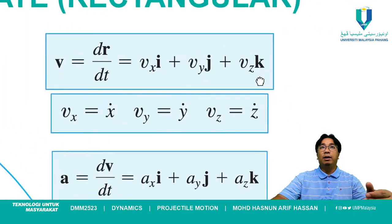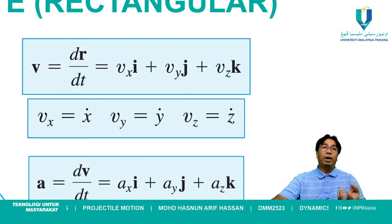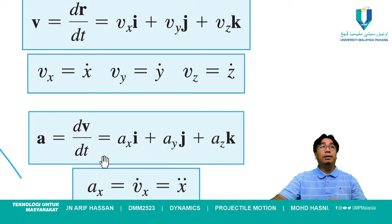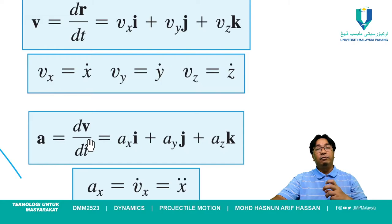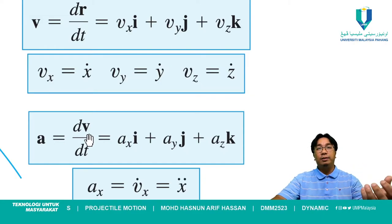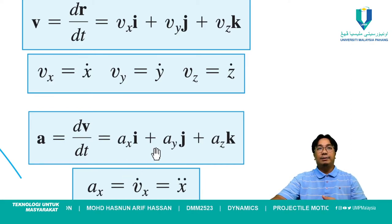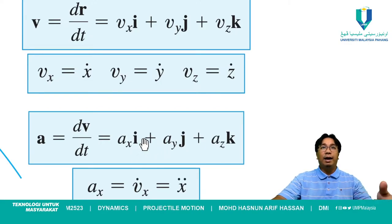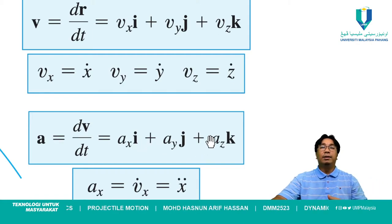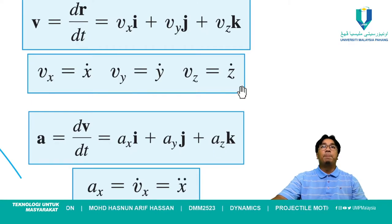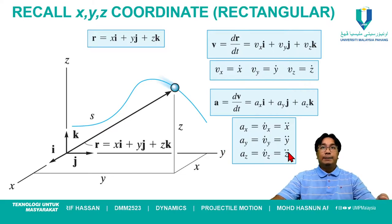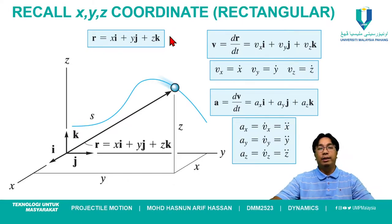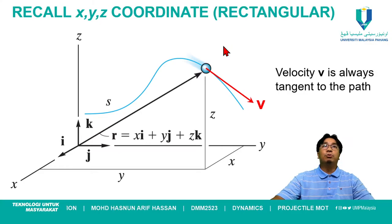When we differentiate position with respect to time, we get velocity — which has components Vx and Vy, with unit vectors i and j respectively. When we differentiate velocity with respect to time, we get acceleration components Ax, Ay, and Az, with unit vectors i, j, and k. This is a brief recall of the rectangular component coordinate system we studied previously.